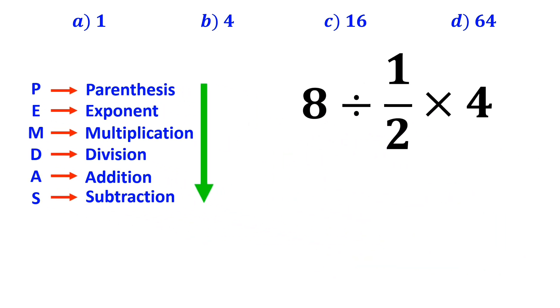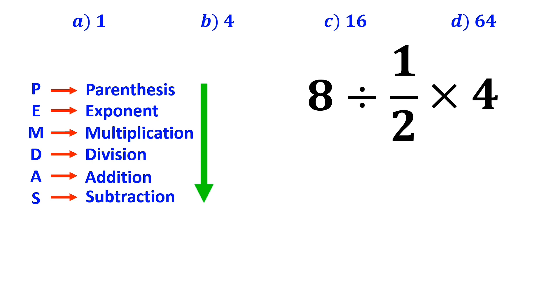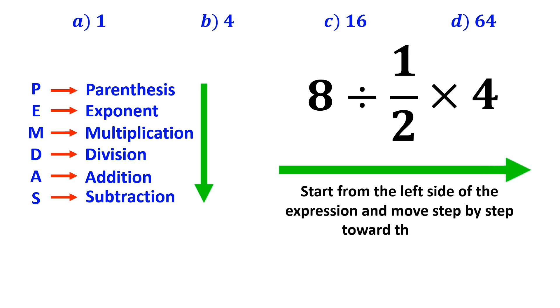As you can see in this expression, we have one division sign followed by a multiplication sign. It's very important to note that multiplication and division are at the same level of precedence. In this case, the best thing to do is to start from the left side of the expression and move step by step toward the right.